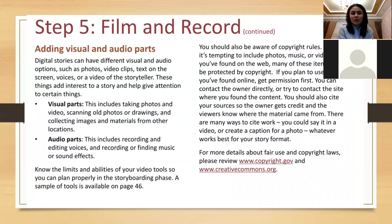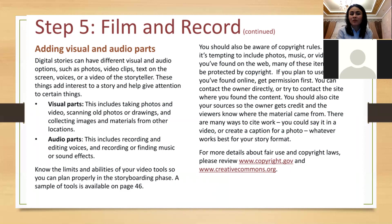Adding visual and audio parts together is the more complicated part of the digital storytelling process. Digital stories can have different visual and audio options such as photos, video clips, text on the screen, voices, or a video of the storyteller. These things add interest to a story and help draw attention to certain elements. Visual parts include taking photos, videos, scanning old photos or drawings, and collecting images and materials from other locations. When collecting images from the internet, be sure you are using websites that provide copyright-free images. Audio parts include recording and editing voice, and recording or finding music and sound effects that match the theme of your story.